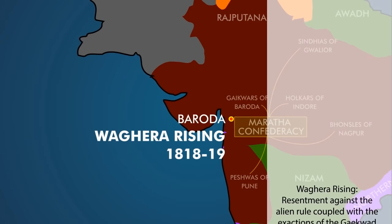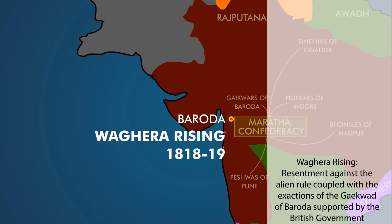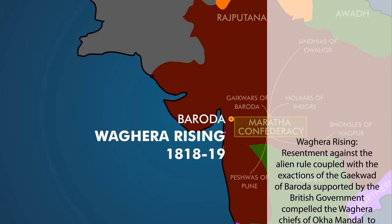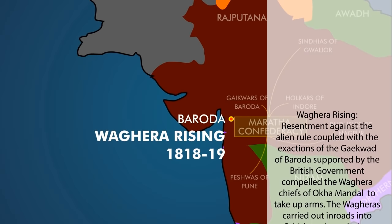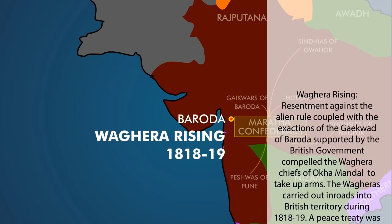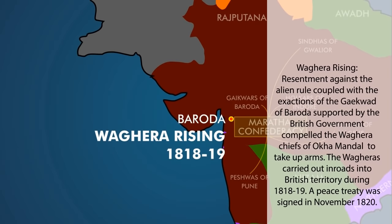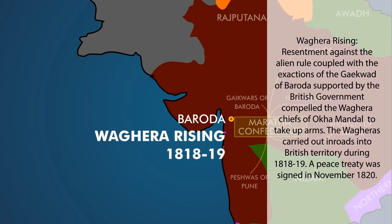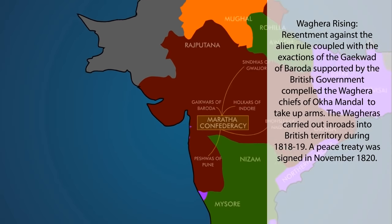Vagheera Rising: Resentment against the alien rule, coupled with the exactions of the Gaikwad of Baroda supported by the British government, compelled the Vagheera chiefs of Okha Mandel to take up arms. The Vagheeras carried out raids into British territory during 1818-19. A peace treaty was signed in November 1820.